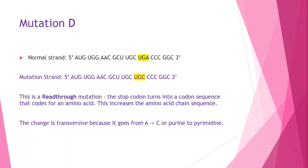In mutation D, the stop sequence in the normal strand became UGC, and this is an example of a read-through mutation, which changes a codon sequence that was a stop into a normal amino acid. In this case, the mutation was transversive as well.